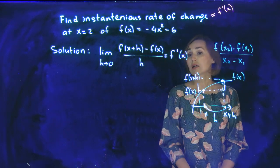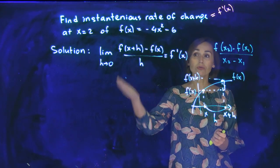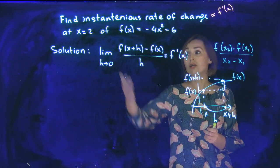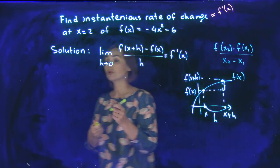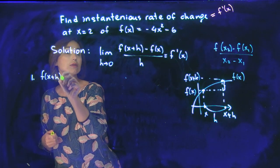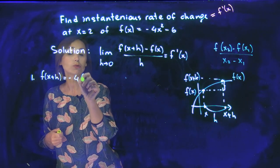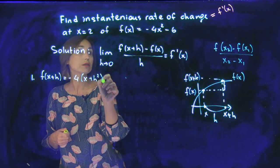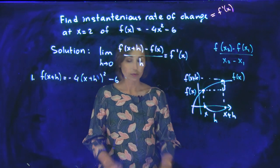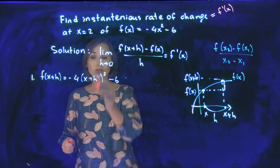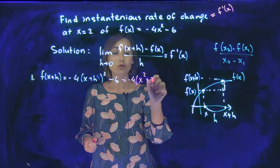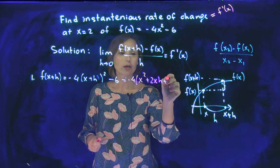Now let's do computation here. So we need to do difference quotient for the quadratic function and then we need to find limit of the difference quotient and plug in number 2. So first step, I will start from f at x plus h. It will be negative 4 times x plus h squared minus 6. So formula square of the sum: x squared plus 2xh plus h squared.